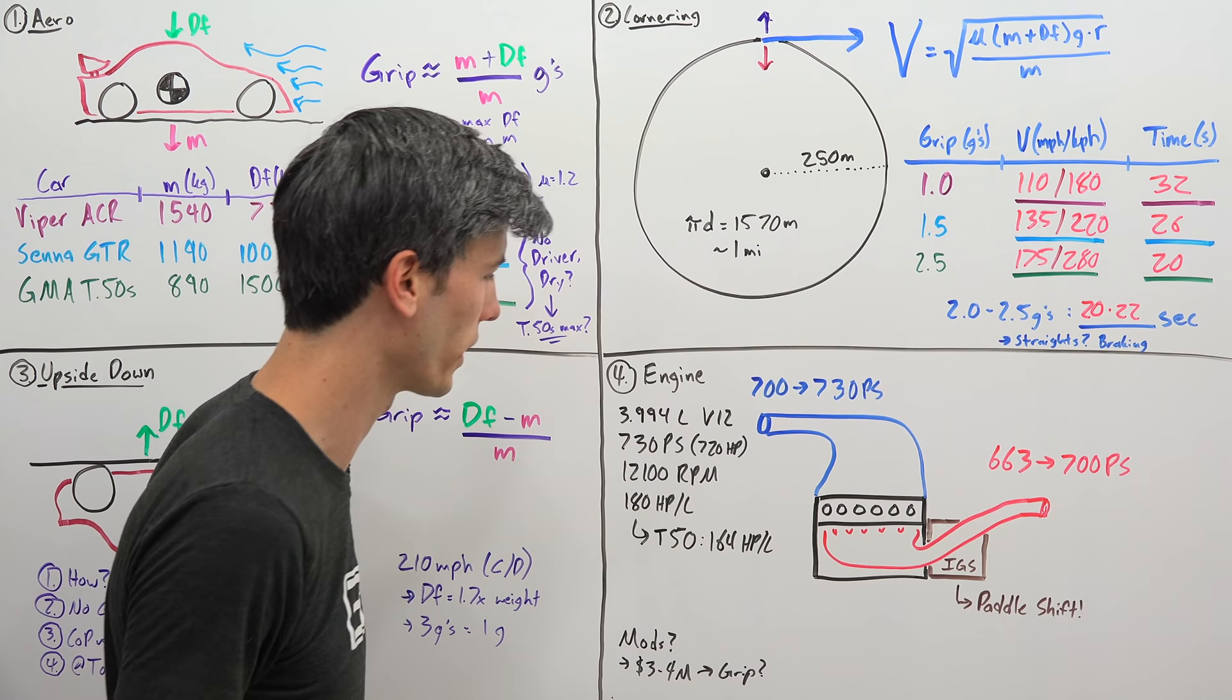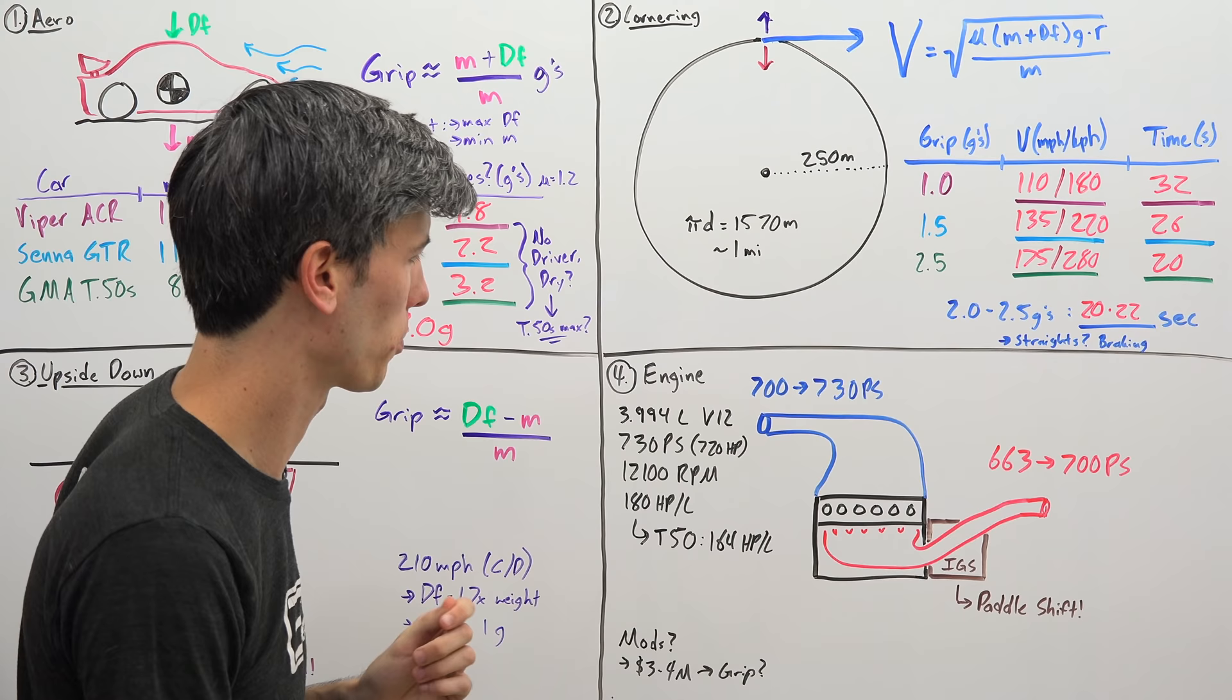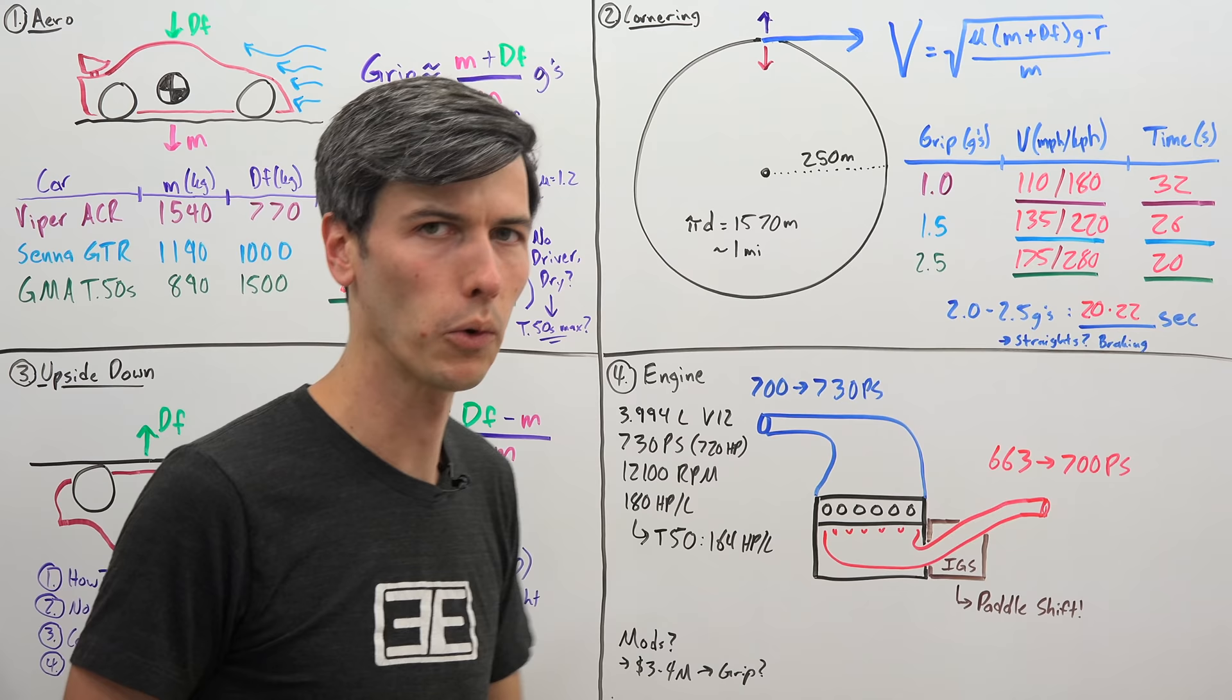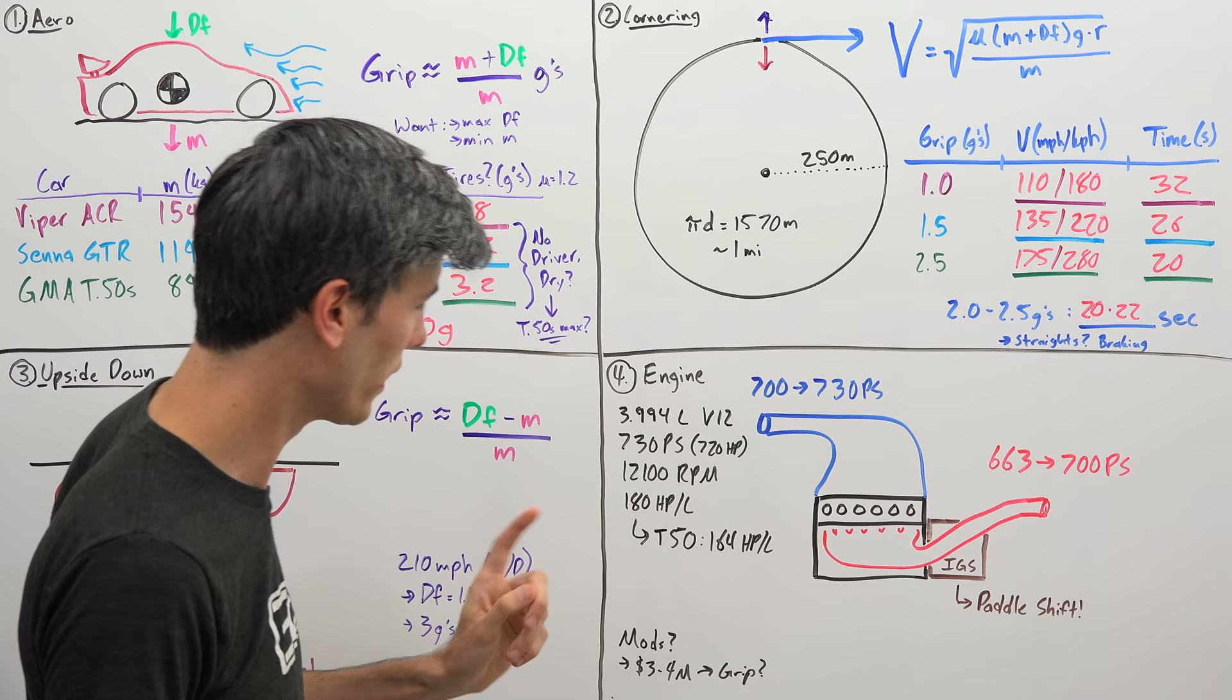Very crazy that this thing produces 720 horsepower out of 4 liters, or about 180 horsepower per liter from a naturally aspirated engine. For comparison, the highest road-legal naturally aspirated engine would be the T50 at 164, and this is significantly higher than that. A car like the Ferrari 458 is around 130 horsepower per liter. This is absurd—more than double what that Viper engine is doing, and a lot of that is because this thing revs so high.